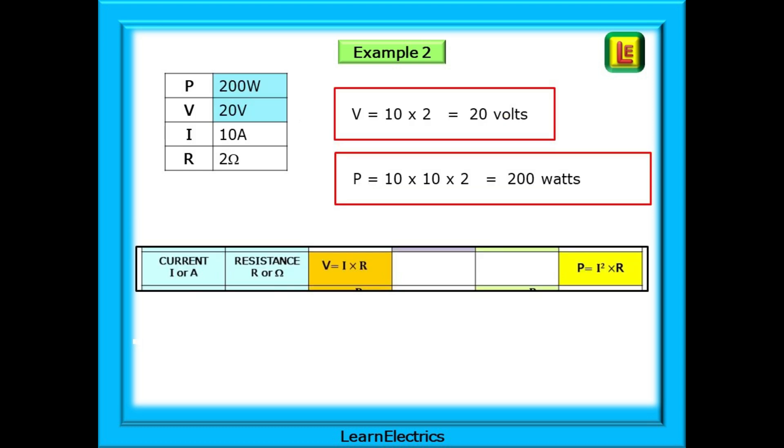These are fairly easy calculations. Voltage is 10 amps times 2 ohms, which is 20 volts, and power is the current squared times the resistance, which is 10 squared times 2. So if 10 squared is 10 times 10, then the calculation should be 10 times 10 times 2, which is 200 watts.